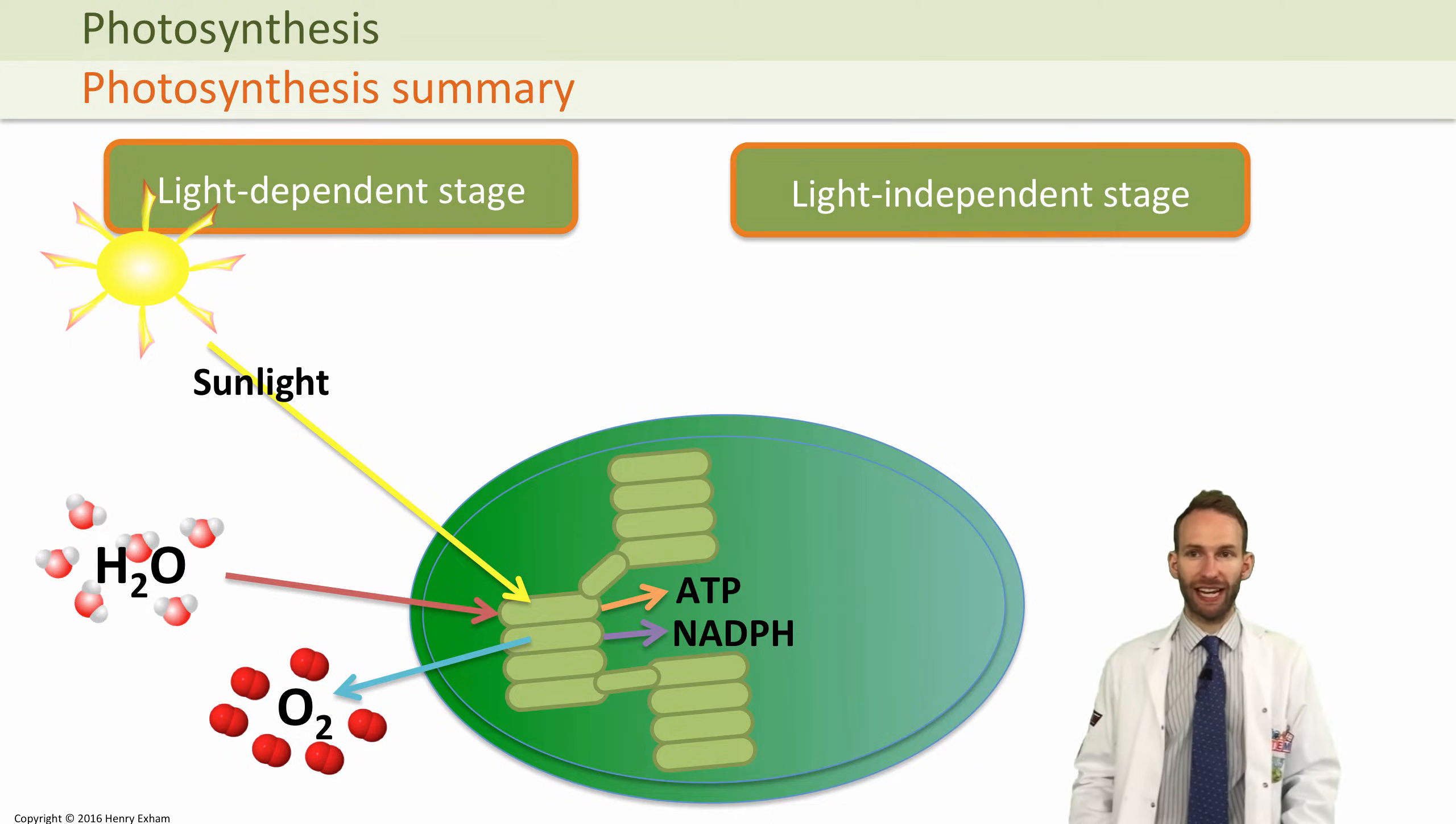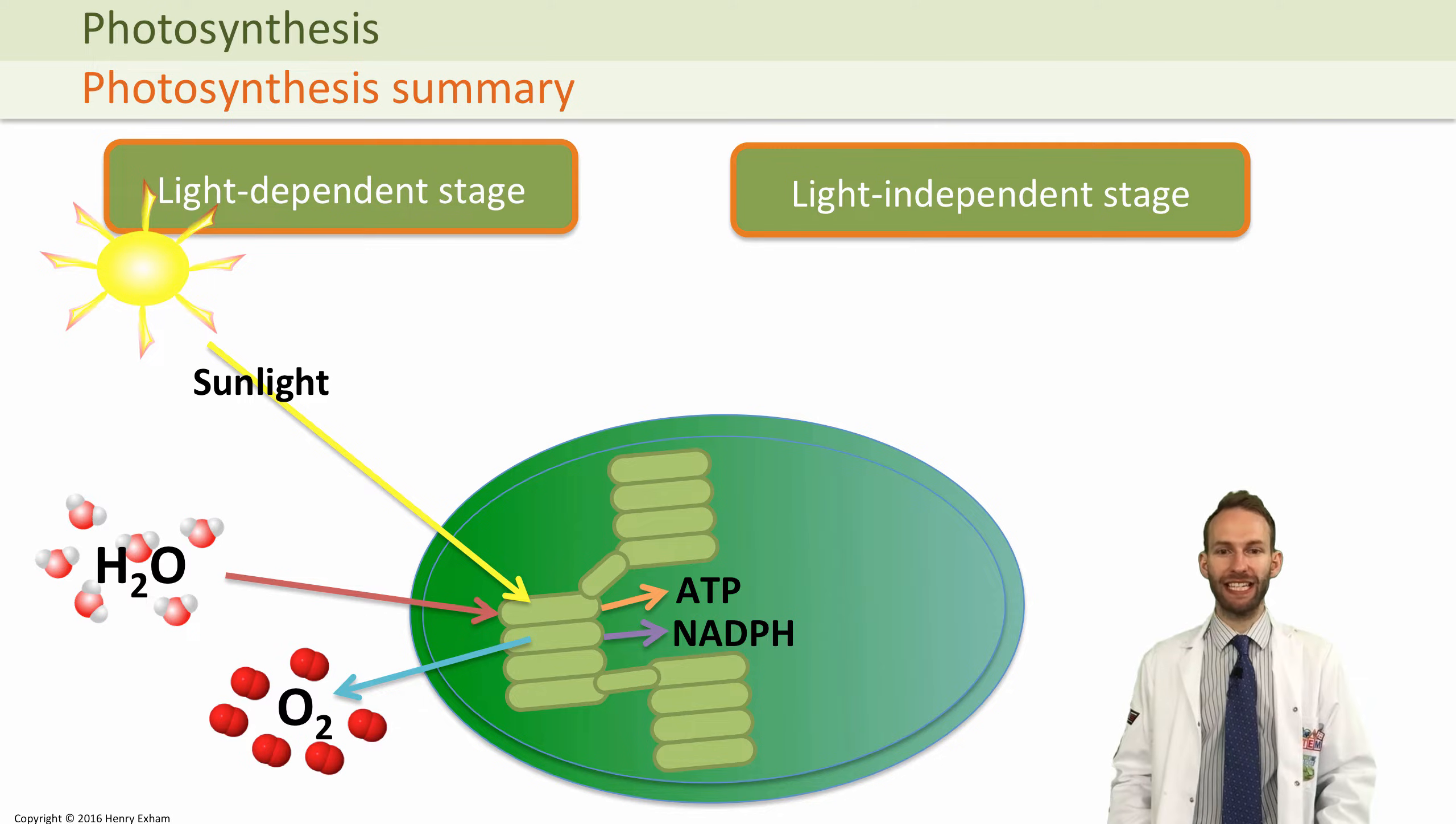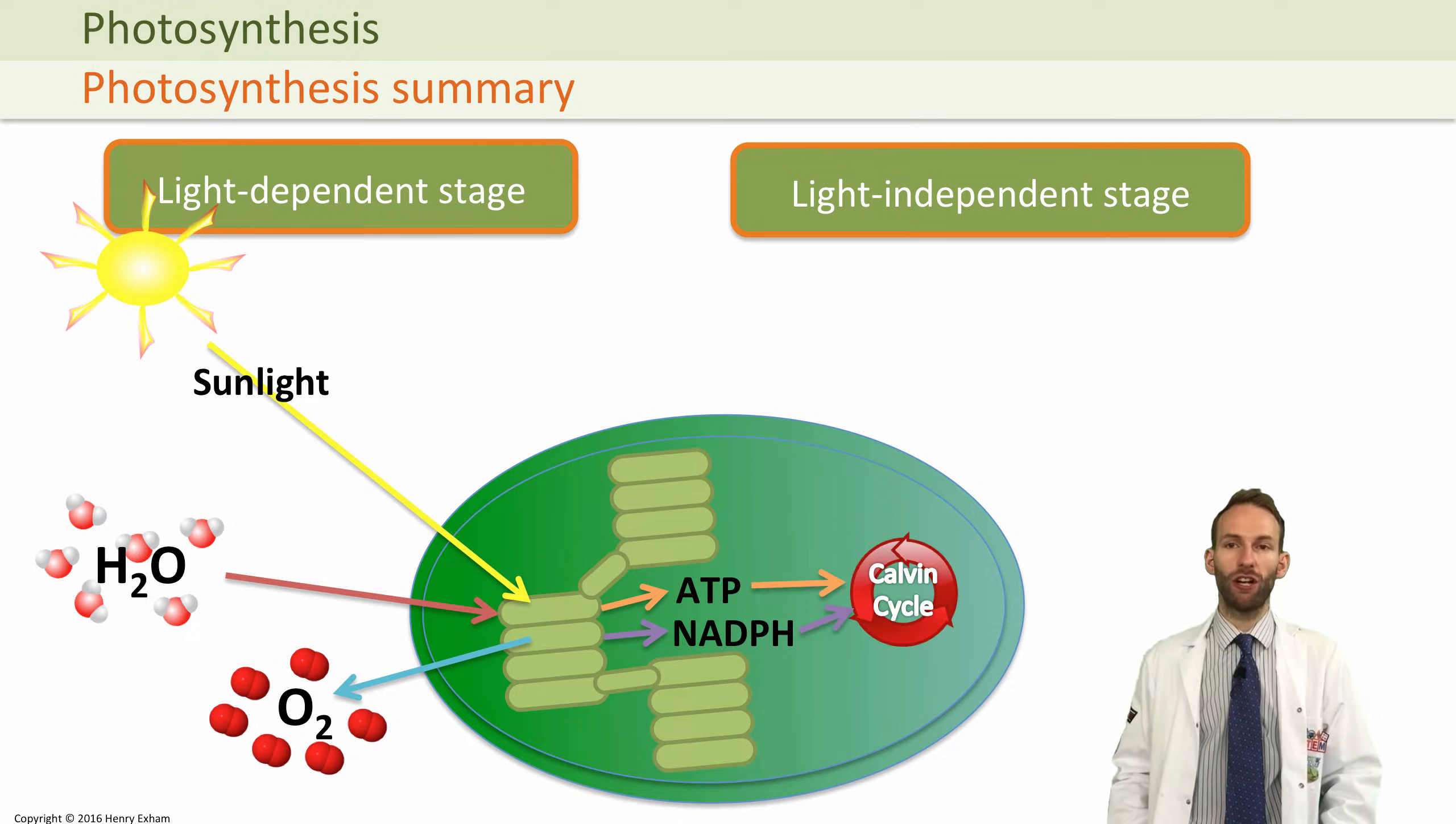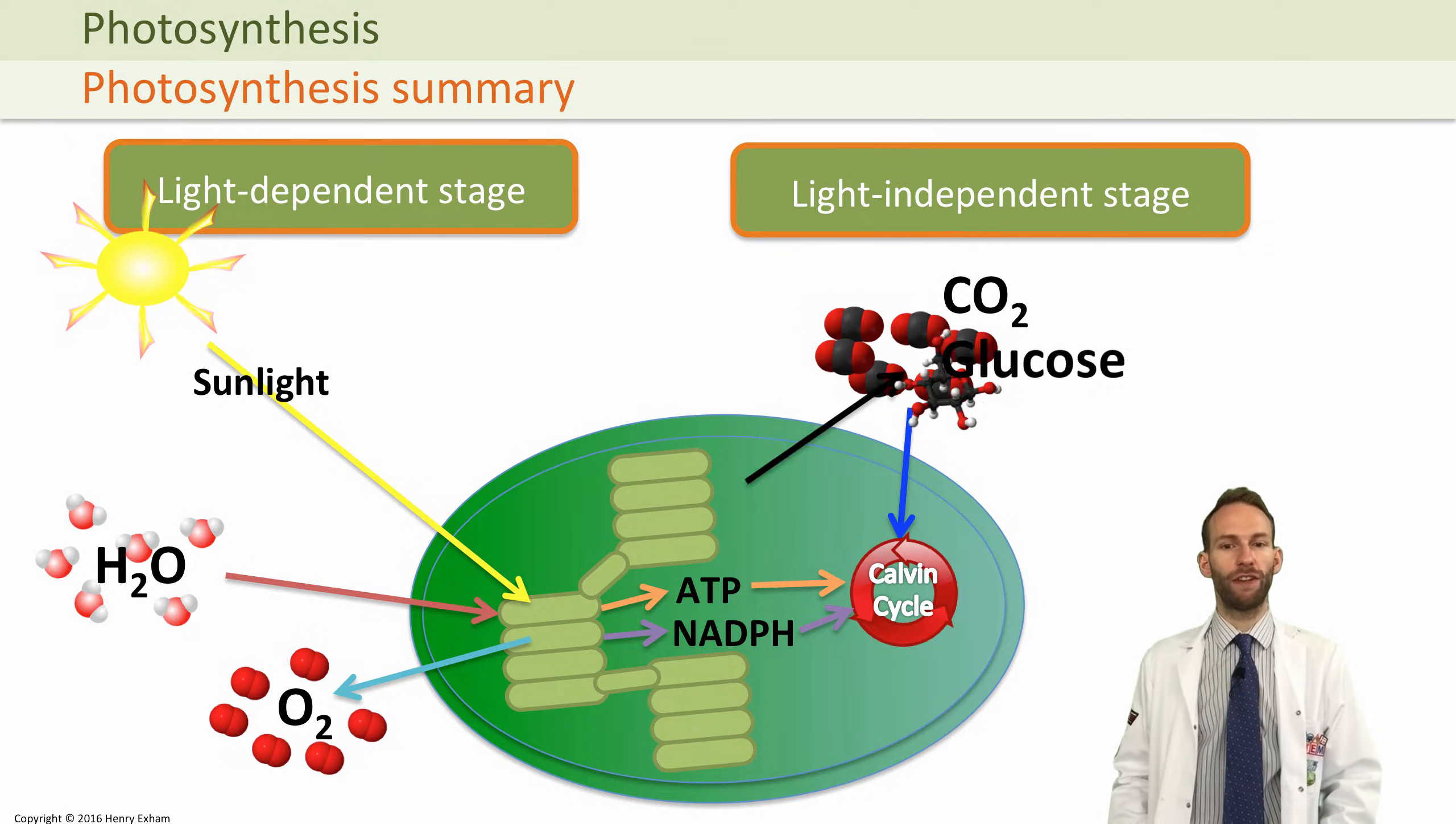In the light-independent stage of photosynthesis, you take that ATP and NADPH produced in the light-dependent stage and it is added into the Calvin cycle along with carbon dioxide, and that's how you make the glucose, which is the whole point of photosynthesis.